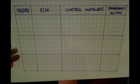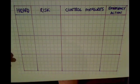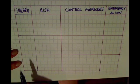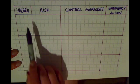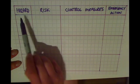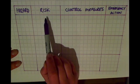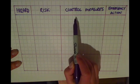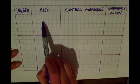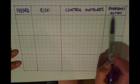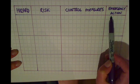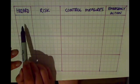In this video I'm going to show you how to write a risk assessment. For a risk assessment you should have a table consisting of four columns: the hazard, the risk, control measures that you are going to take to prevent that risk from happening, and the emergency actions that you have to take in an emergency.